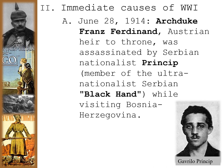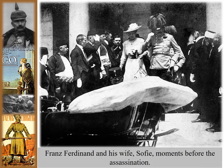On June 28th, 1914, Archduke Franz Ferdinand, the Austrian heir to the throne, was assassinated by a Serbian nationalist named Gavrilo Princip, a member of the ultra-nationalist Serbian group called the Black Hand. The Archduke was visiting Bosnia-Herzegovina when the assassination happened. Here is Franz Ferdinand and his wife Sophie, moments before the assassination where they will both be killed.